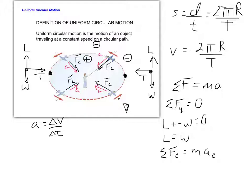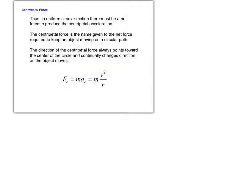Going back to Newton's second law: the centripetal forces are made up simply of the tension, which always points inward and is positive. There are no other centripetal forces here. Now, what is the centripetal acceleration? The centripetal force equals mv²/r, so centripetal acceleration equals v²/r.